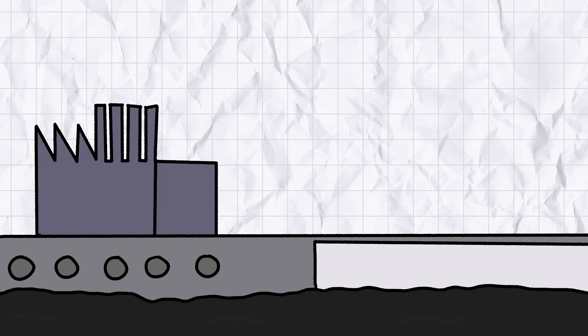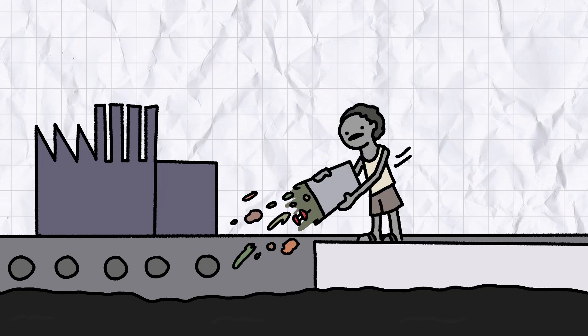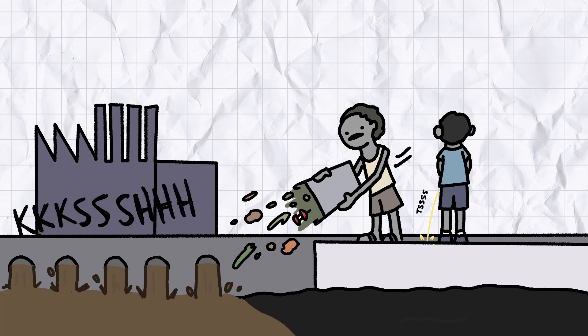The death of the Buriganga was one of a thousand paper cuts. Having one of the most densely populated cities on earth use it as a communal latrine for centuries didn't help, but the deepest and nastiest cuts were inflicted upon it by the garment industry.